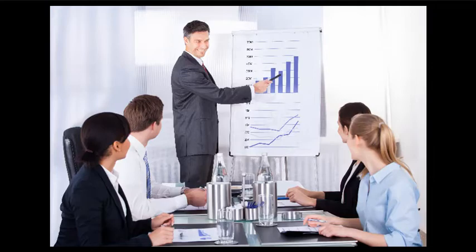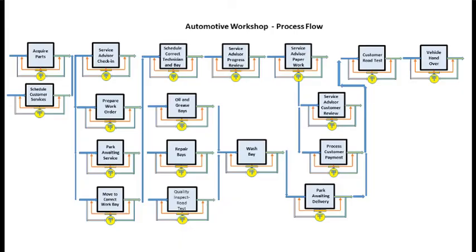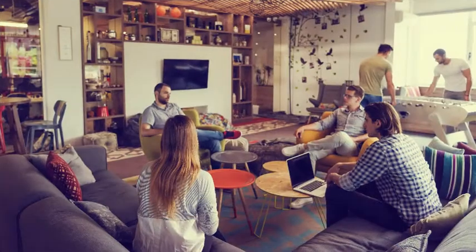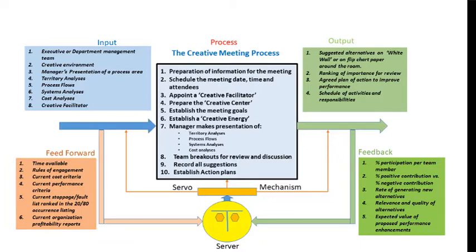The manager then makes a presentation of the territory, the process flow, the system analysis, and the cost analysis for each of the departments in the function. The team can then discuss generally — if it's a small team — or break out into groups where they review and discuss and then come back and contribute. It's important on the whiteboard and on the flip charts around the room to capture all of the contributions, not to evaluate a single one, but to leave that until later, and then to establish action plans so that you can squeeze out more from less in the departments in that particular function.